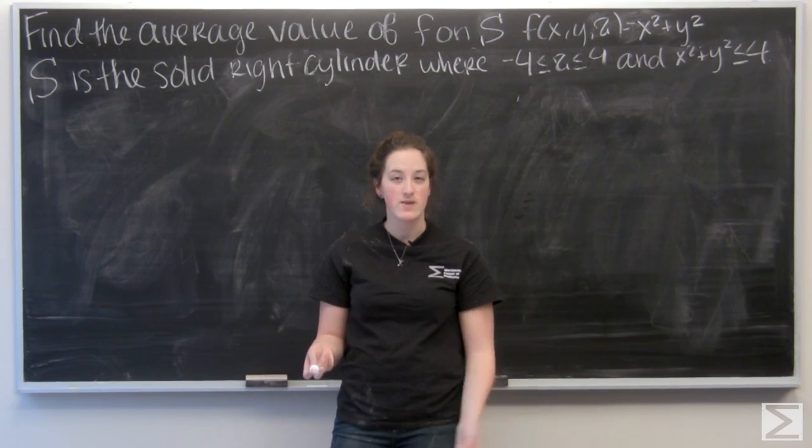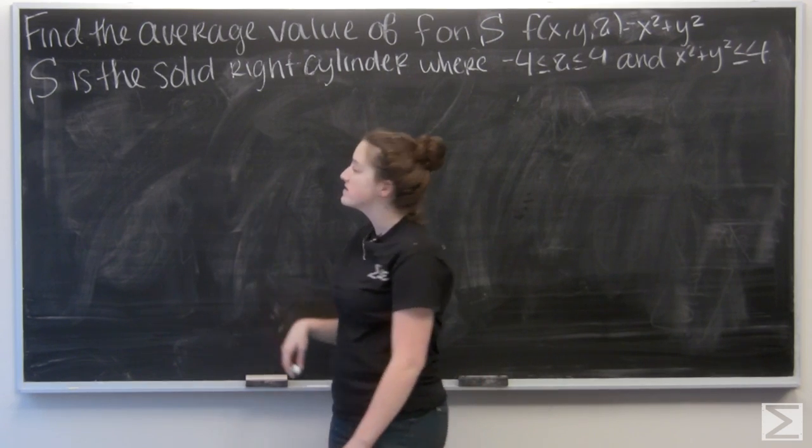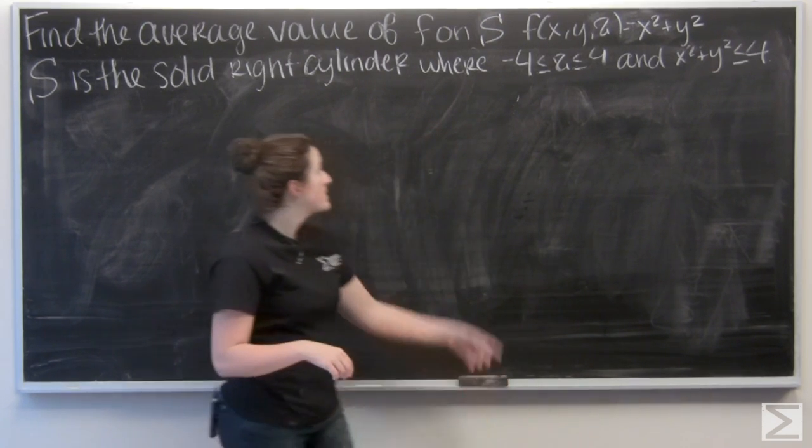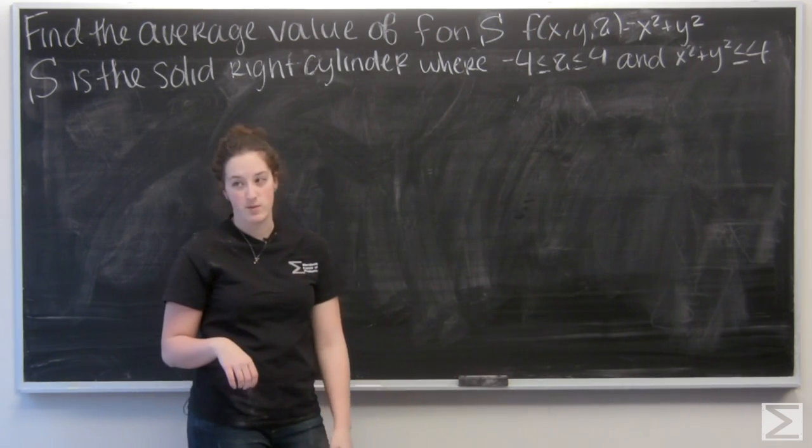So for this problem, we're given a function and we're asked to find its average value over a solid. Here, our solid is a right cylinder, goes from negative 4 to 4 for z, and x squared plus y squared is less than 4.